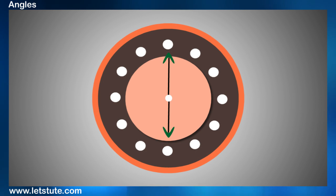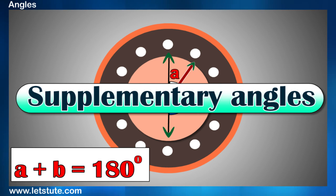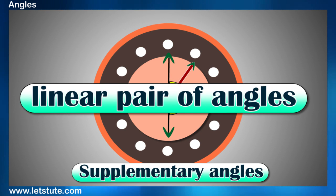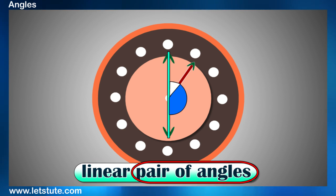And when a straight line angle is cut by another ray, these angles are called as supplementary angles. Well, supplementary angles are also called as linear pair of angles. Linear because they lie on a straight line. And there are two angles, hence a pair.